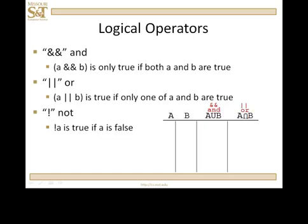So, the possibilities are that A is true, B is true. A is true, B is false. A is false, B is true. A is false, B is false. So, the question is, what's A and B? True and true is true. Everything else is false. True and false is false. False and true is false. False and false is false. In other words, A and B is true only if both A and B are true.